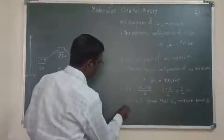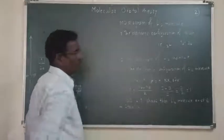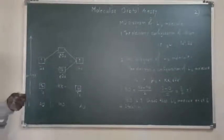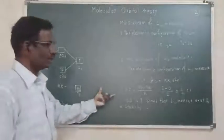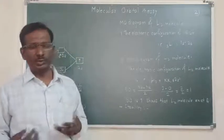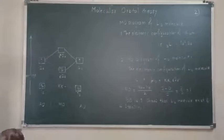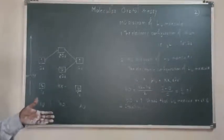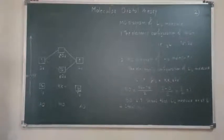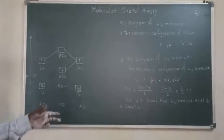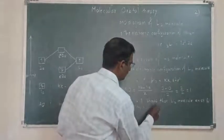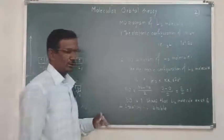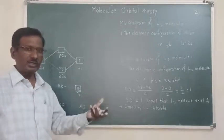The fourth point is stability. If bond order is greater than 0 — meaning 1, 2, 3, or more — the molecule is stable, and as bond order increases, stability also increases. In this case, bond order is 1, therefore the molecule is stable. It is not necessary to remember bond length and bond dissociation energy; you can simply state whether the molecule is stable or unstable.